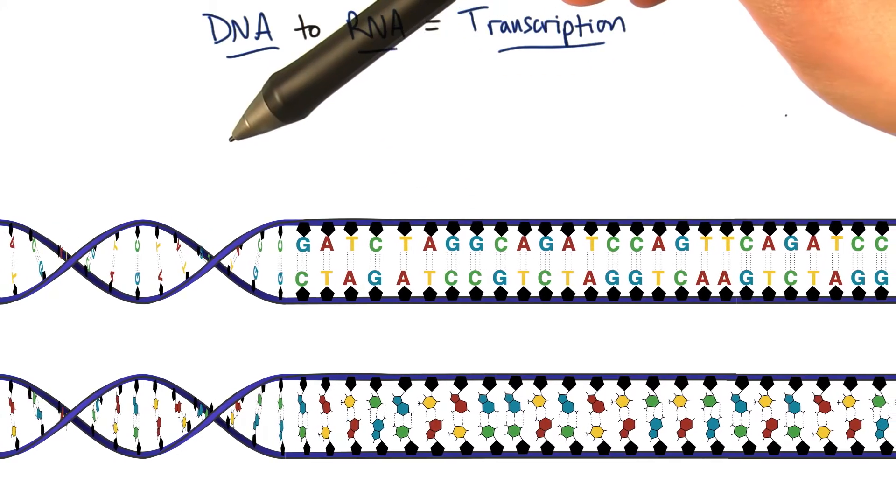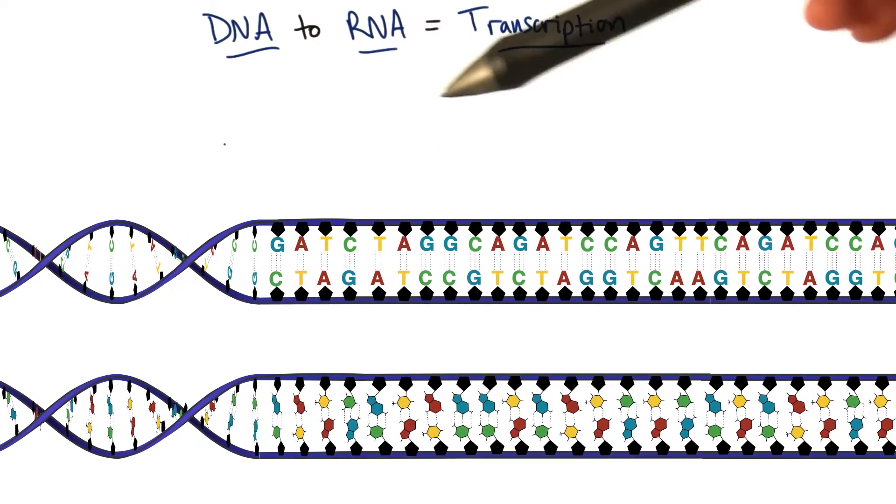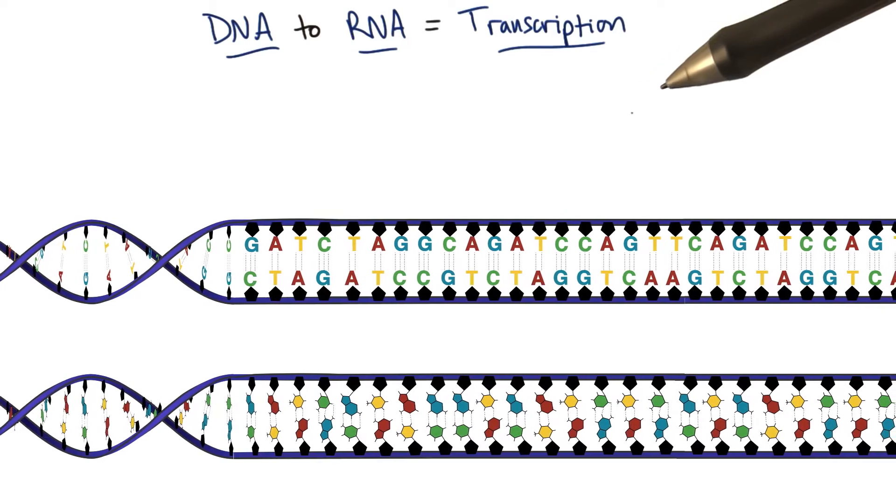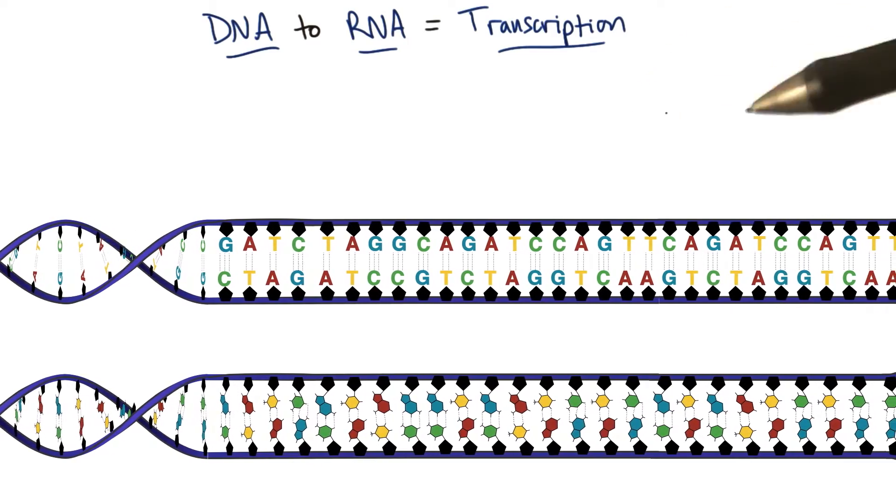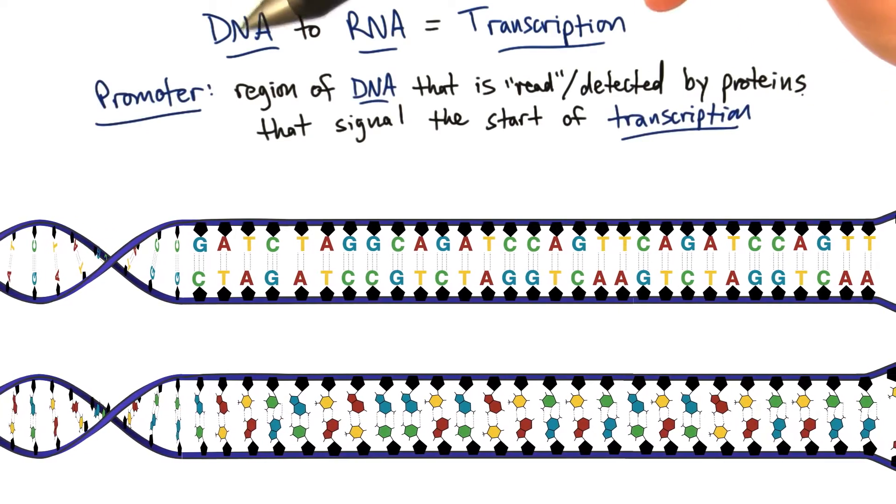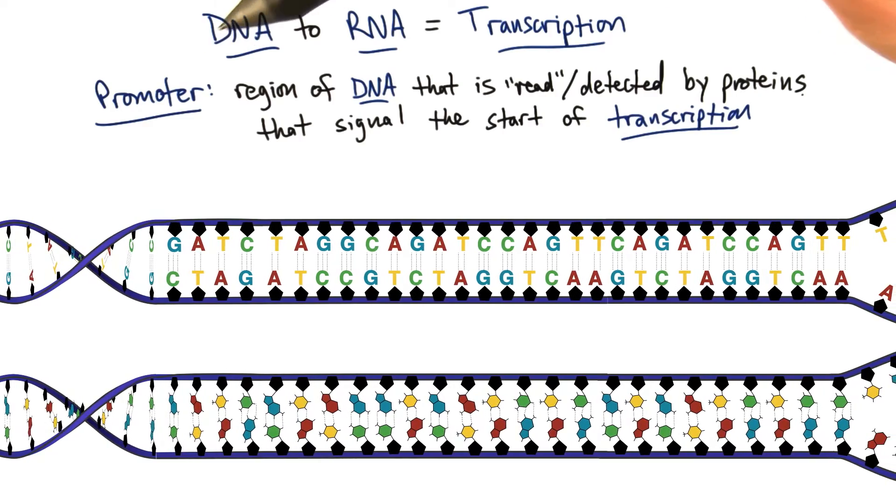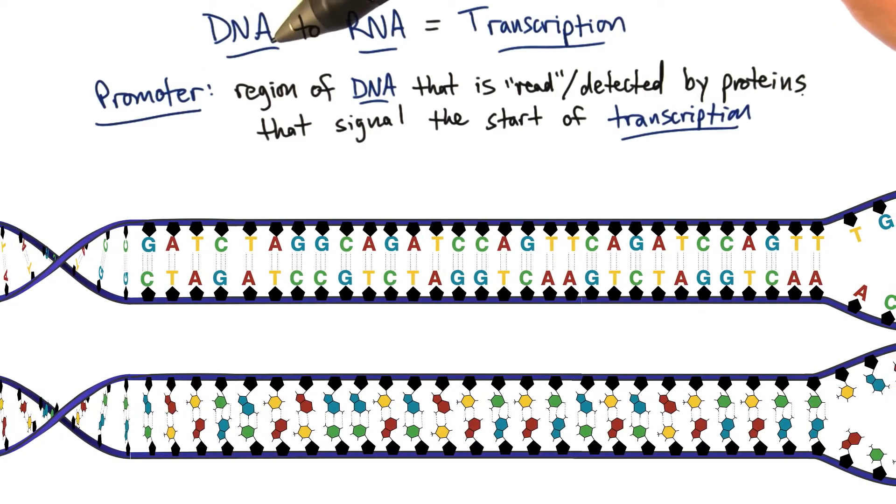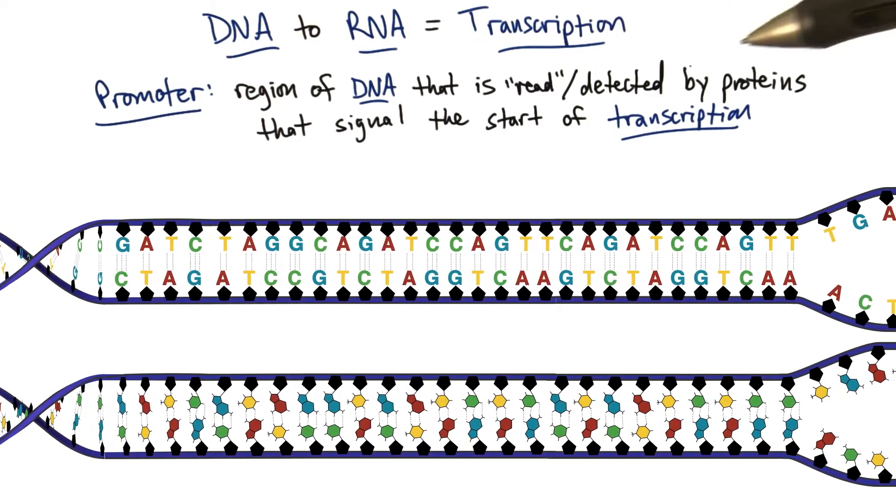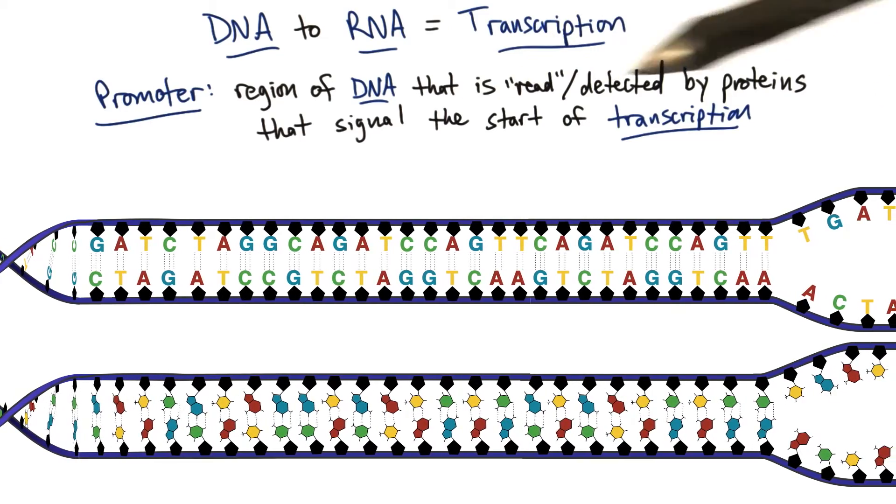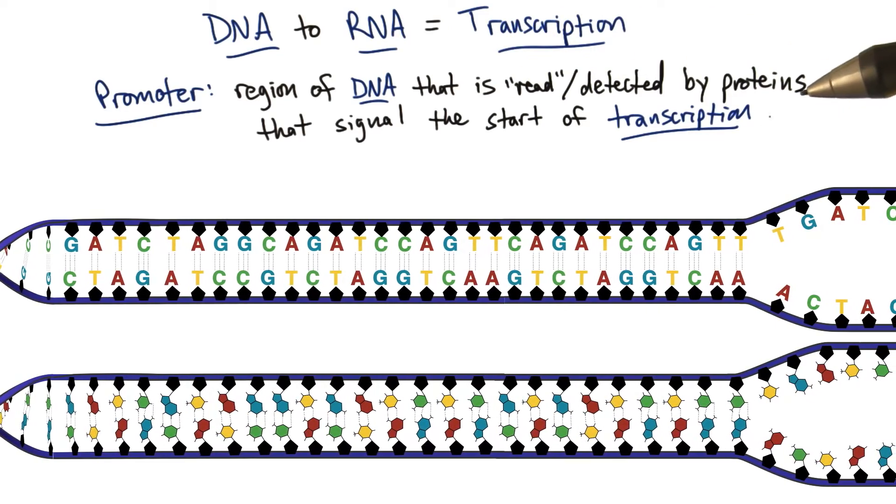Now, the cell is going to use proteins to detect where transcription should begin. And we're going to learn more about how that happens in the next lesson. But for now, all you should know is that this sequence region is called a promoter, a region of DNA that's read or detected by proteins that signals the start of transcription.